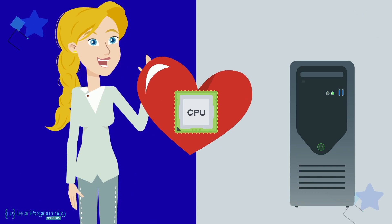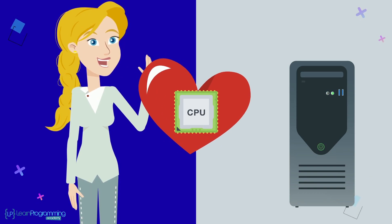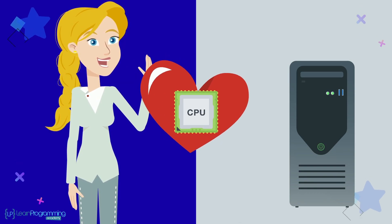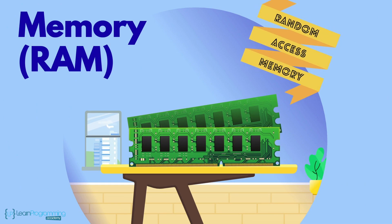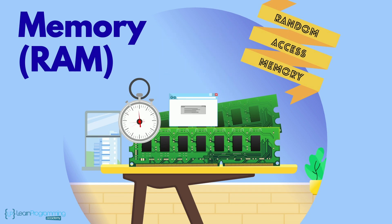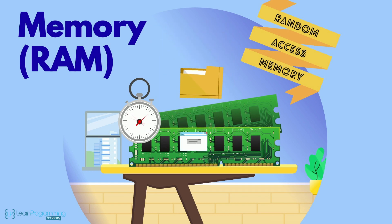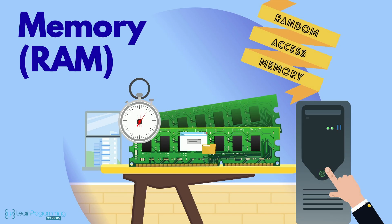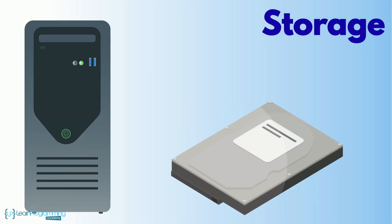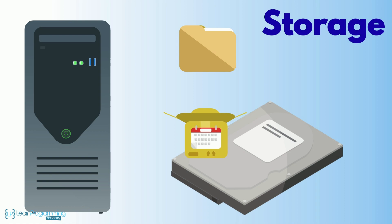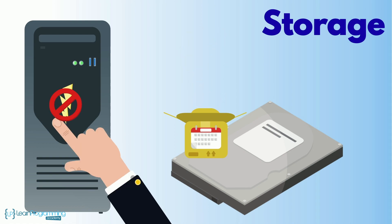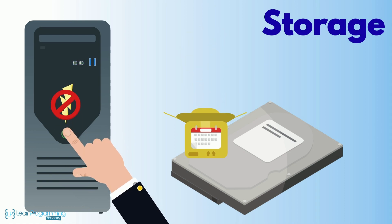Some of us geeks think of the CPU as the heart of the computer, like the human heart — it brings everything to life, so to speak. Memory, often called RAM for random access memory, is usually used for the temporary holding of software programs and apps and their associated data until the power is turned off. Storage is the term that describes the long-term holding of software programs and apps and their associated data, even if power is turned off on the computer or device.